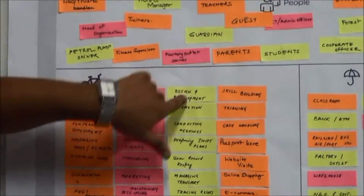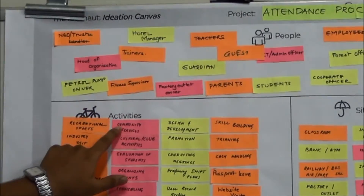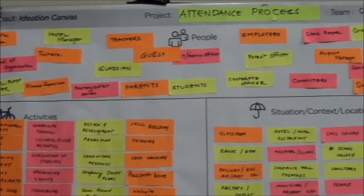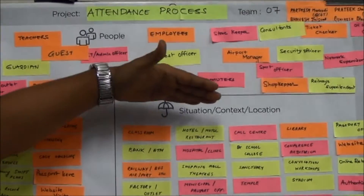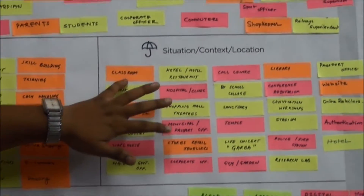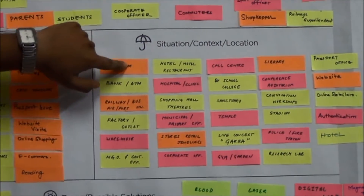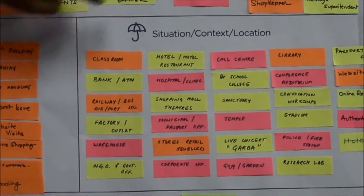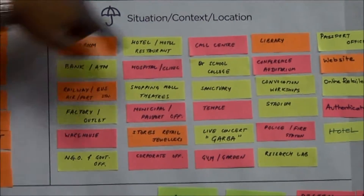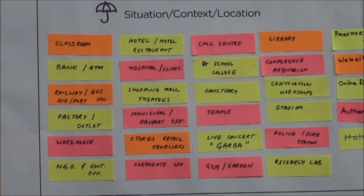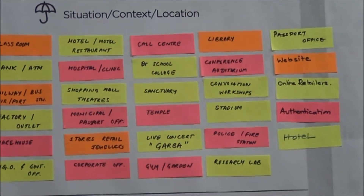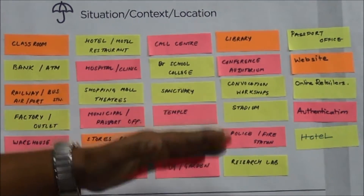We combine the particular people and the activities, considering at what situation, context, and location they will be performed. We have some locations and contexts here — for example, a student reading in the classroom. So we can connect students with classrooms. Libraries are also there, websites are also there. These are the locations we have to write.